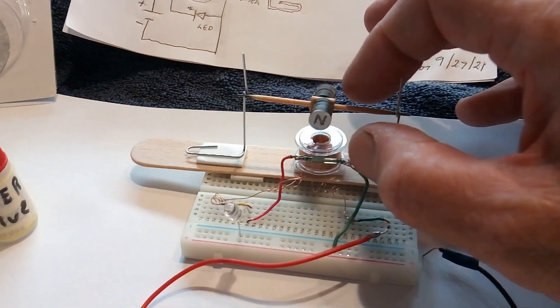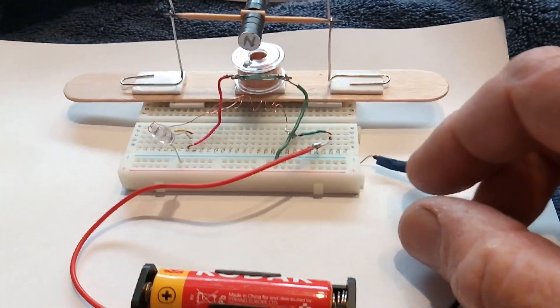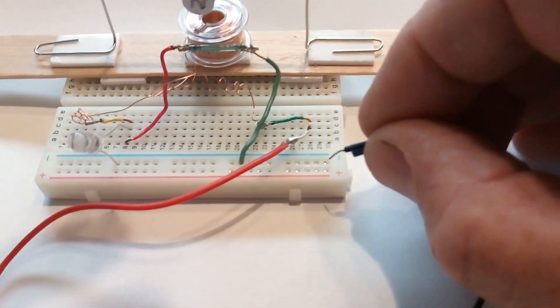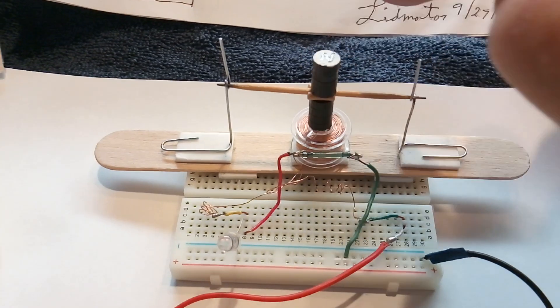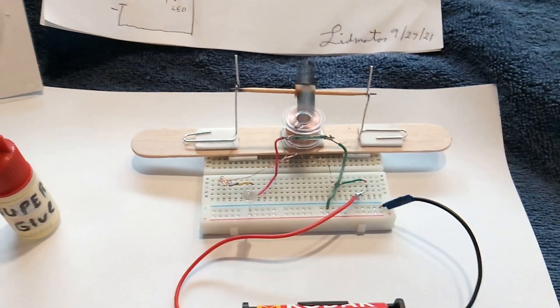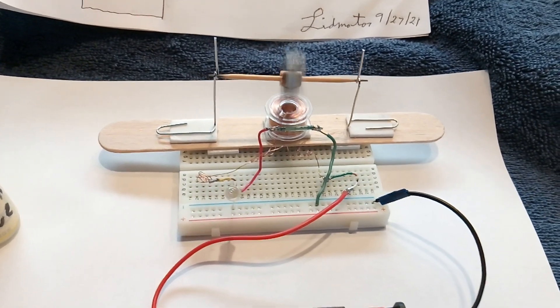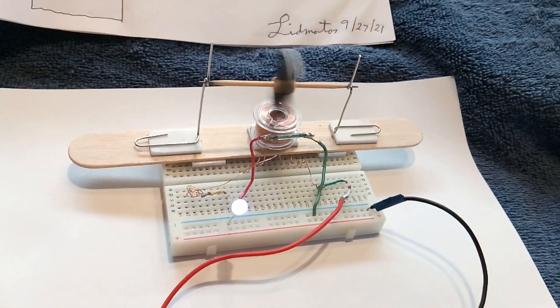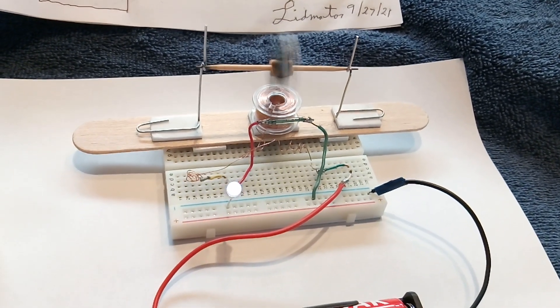But anyway, let me show you how this works. I'm gonna put the power on here and give this a little click here. And there goes the motor. And the camera's doing something weird with the frame rate, but that thing's really moving. And here again, it's a very strange motor with these magnets being all together, north-south.